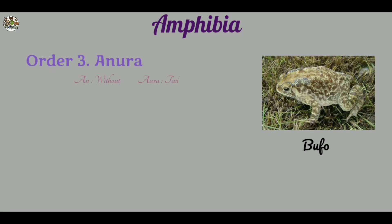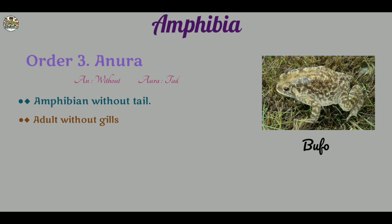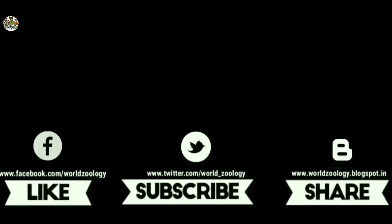Order three: Anura. 'An' means absent or without, and 'oura' means tail. Here are some characters of order Anura. Amphibians without tails. They are mostly living on land, so they are without gills. Internal fertilization occurs. For example, Bufo.